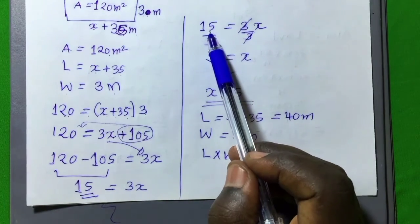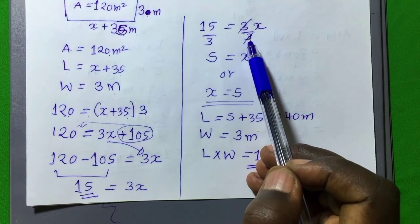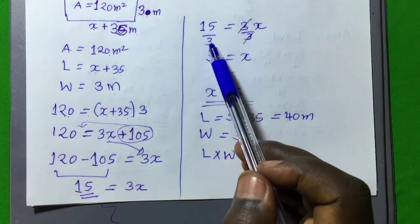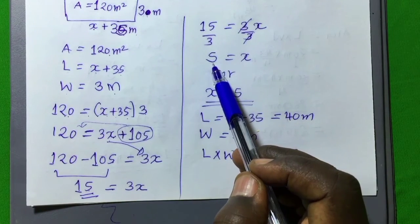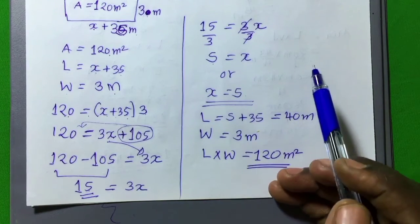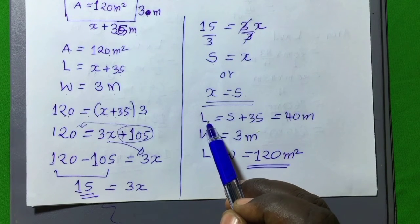Let's say 15 is equal to 3x. To get the value of x, divide this side by 3, and this side by 3. Then 3 goes to 3, 15 divided by 3, we will get 5, which is equal to x, or you can say x is equal to 5, whichever way you say.